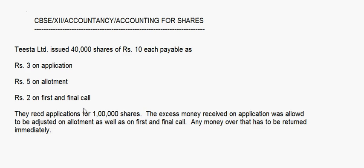Today let's take up the question on pro rata allotment. Tista Limited issued 40,000 shares of rupees 10 each, payable as rupees 3 on application, 5 on allotment, and 2 on the first and final call. They received applications for 1 lakh shares. The excess money received on application was allowed to be adjusted on allotment as well as on the first and final call, and any money over that had to be returned immediately.